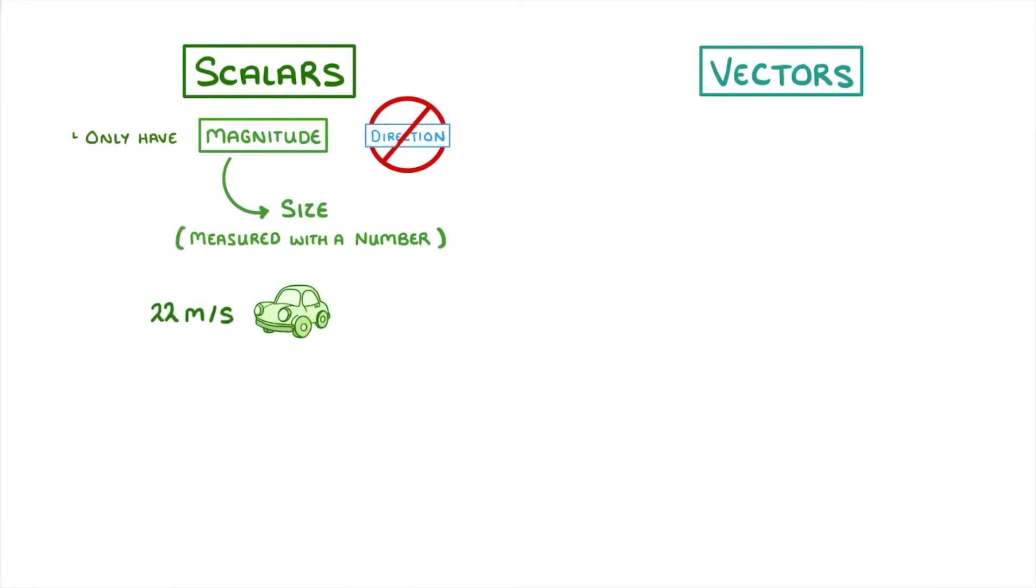For example, if a car travels at 22 meters per second, 22 would be the magnitude of the speed. And because speed by itself doesn't have a direction, we consider it a scalar quantity.